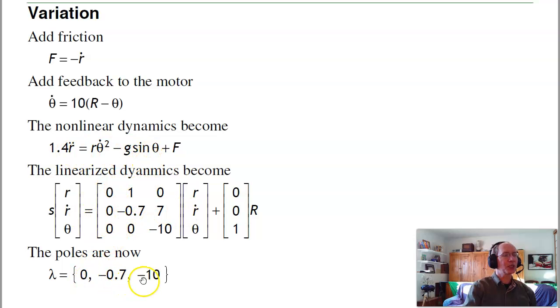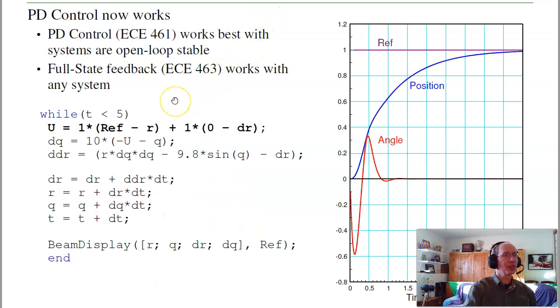Now the poles are at 0, -0.7, -10. With that system, I can actually control it.